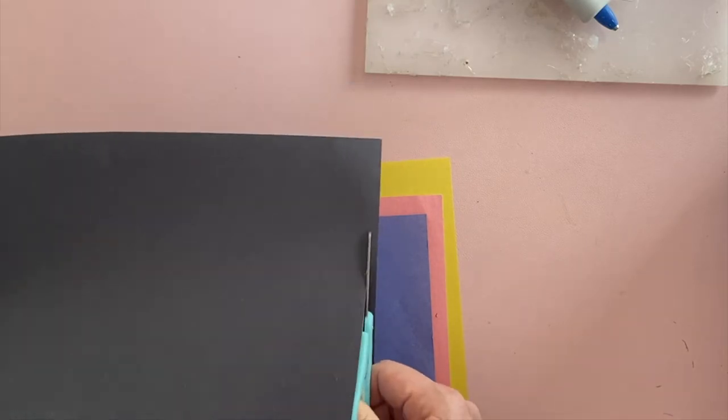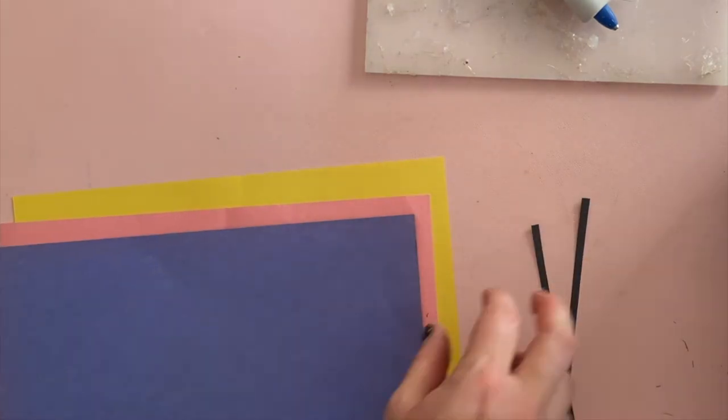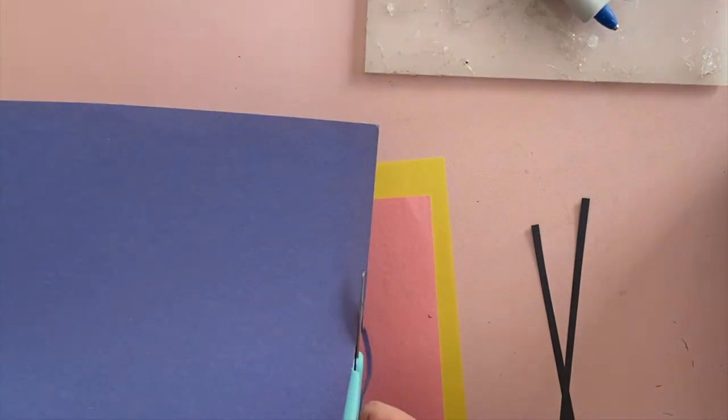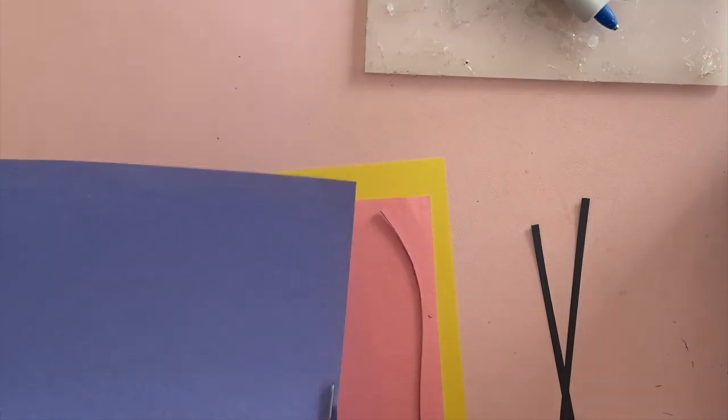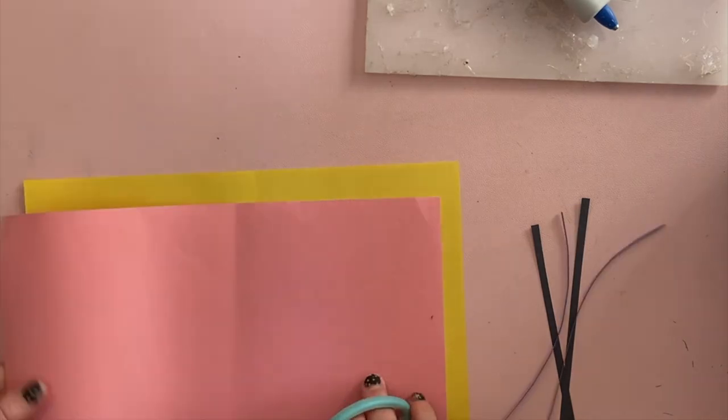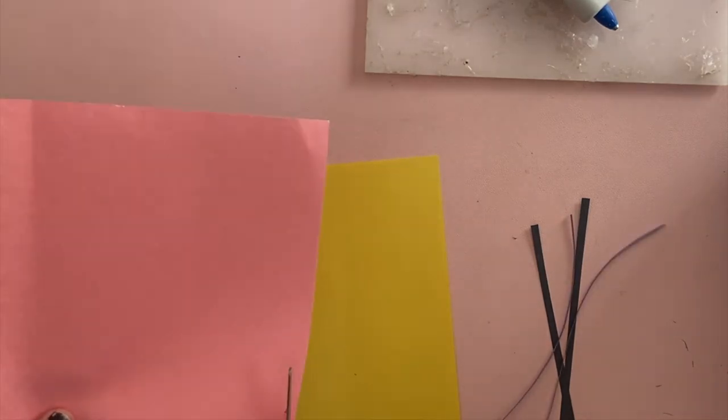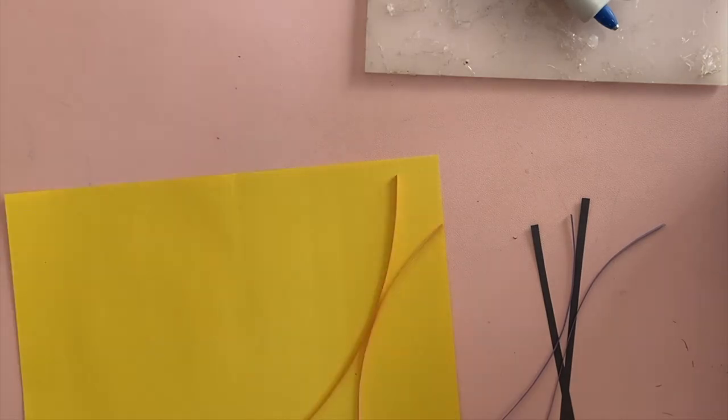On the short side of your construction paper, cut two very narrow strips of paper for each color. I've got two black, two blue, two pink, and two for yellow.